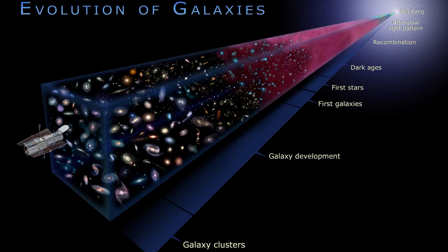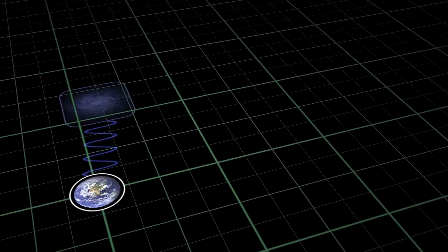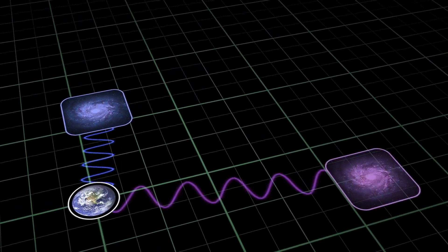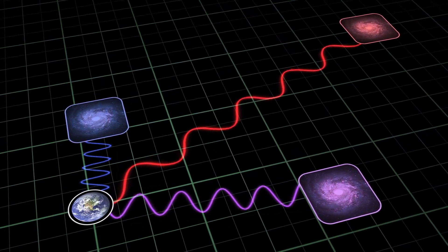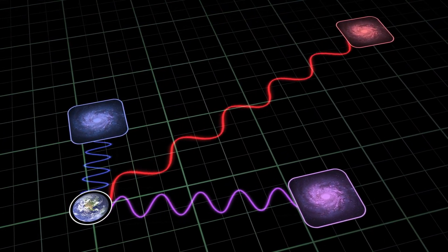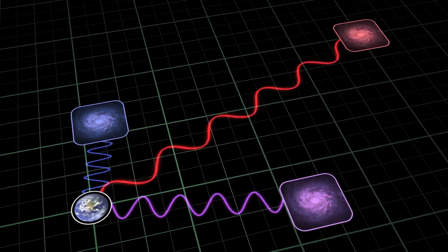In astronomy, redshift is represented by the dimensionless number Z, where Z=0 represents the present. Additionally, as its importance grows for distant things, so do its distance and our look-back period. It's a big deal to identify galaxies above a redshift of 11, yet Hubble could only find one in its 30 years of searching.